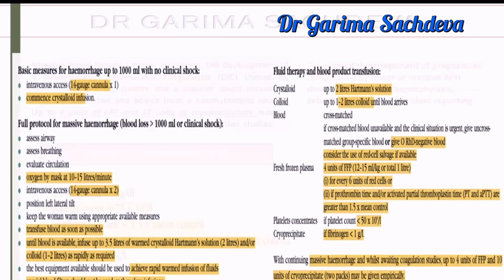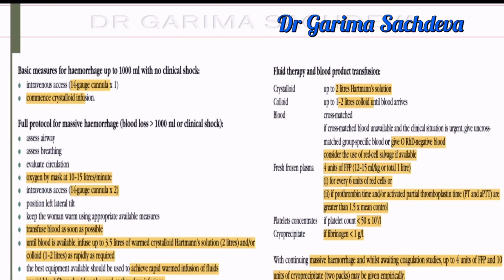Starting with the APH guidelines. In a patient with APH, you should give 2 liters of crystalloids and 1 to 2 liters of colloids. Regarding blood, you initiate blood transfusion — if cross-match blood is not available, you can give O-negative blood, and as soon as cross-match blood is available, you start that. Regarding fresh frozen plasma, for every 6 units of PRBCs, you give 4 units of FFP. Another criterion to give FFP is if prothrombin time or partial thromboplastin time is more than 1.5 times normal. The dose of FFP is 12 to 15 ml per kg.